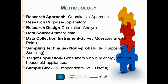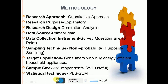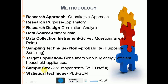After this, mention the sample size and statistical technique used. As you can see, two sample sizes are mentioned here — 351 and 291. The 351 was the sample initially gathered, but after data screening it reduced to 291. Clearly mention both the total sample size gathered and the useful sample size that remained after the data screening process.